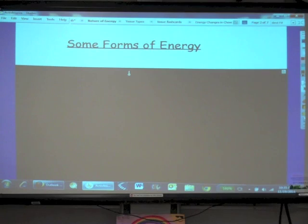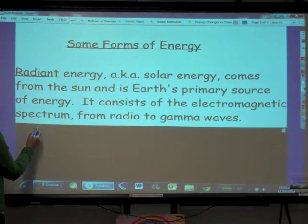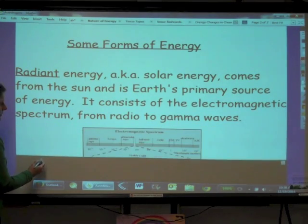So let's talk about some forms of energy. What are some typical forms of energy? Radiant energy. Radiant energy, also known as solar energy. And that comes from the sun and all other stars. It's the Earth's primary source of energy. It consists of everything in the electromagnetic spectrum, from radio waves to gamma waves.